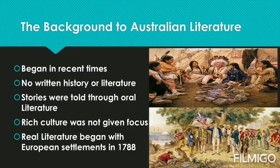Background to Australian Literature: Australian Literature really began in more recent times. The reason is because the Aboriginal people did not have a written history or literature. They told their stories and their history through word of mouth, like oral literature — a mother would tell the child and then the child would tell their children. As a result, there are no history books or ancient Aboriginal pieces of literature. This means that while they had over 400 languages and an extremely rich culture, written literature really wasn't the focus in Aboriginal society.